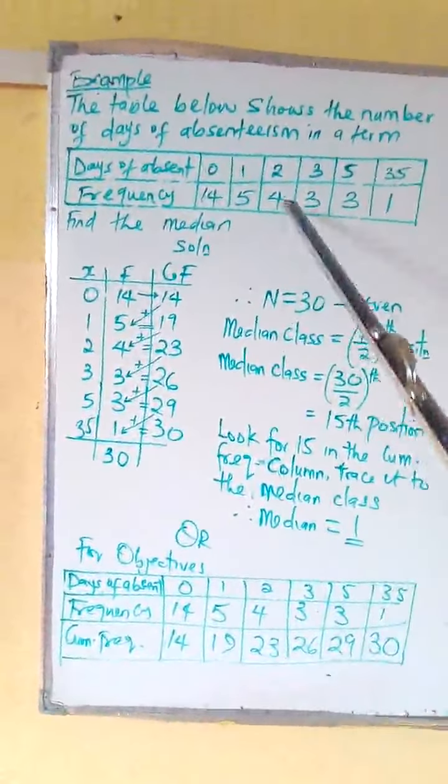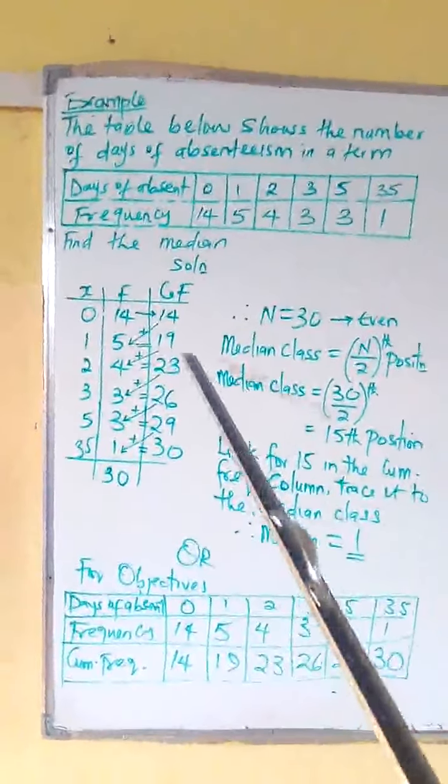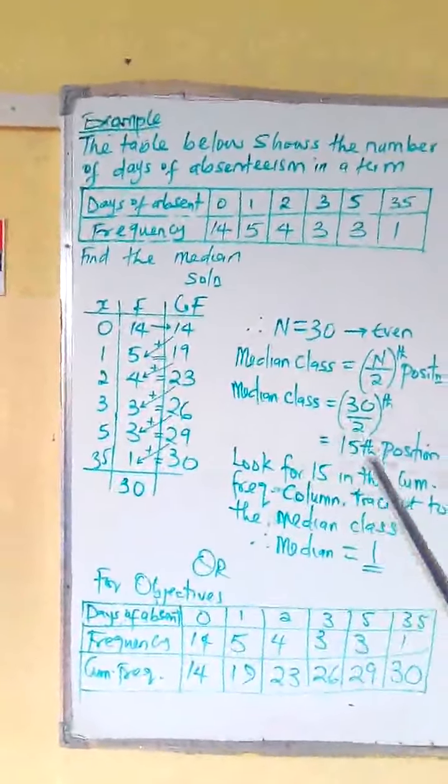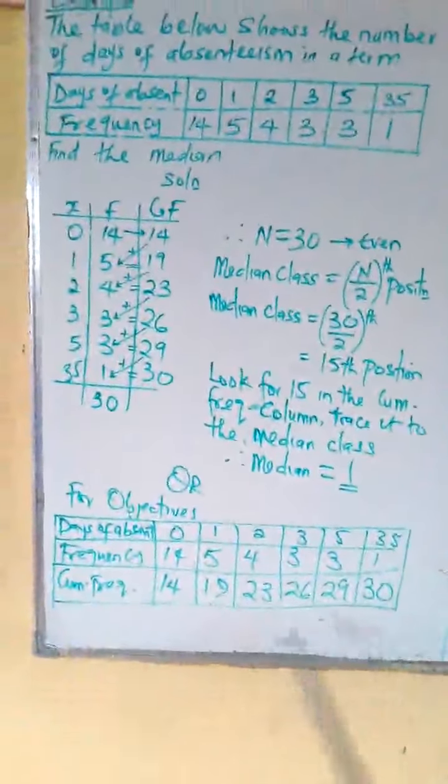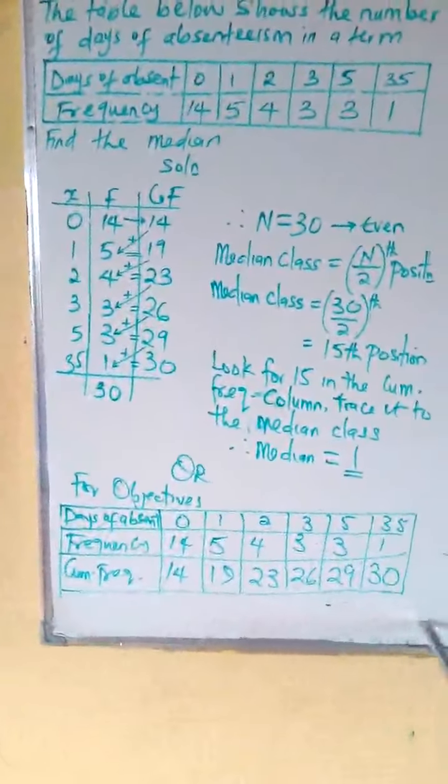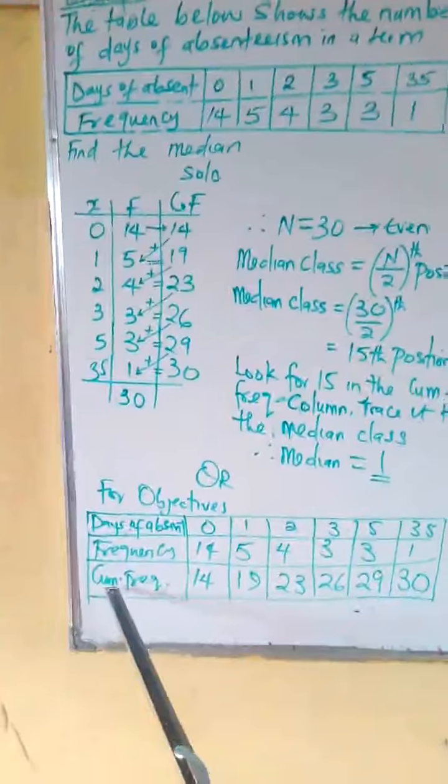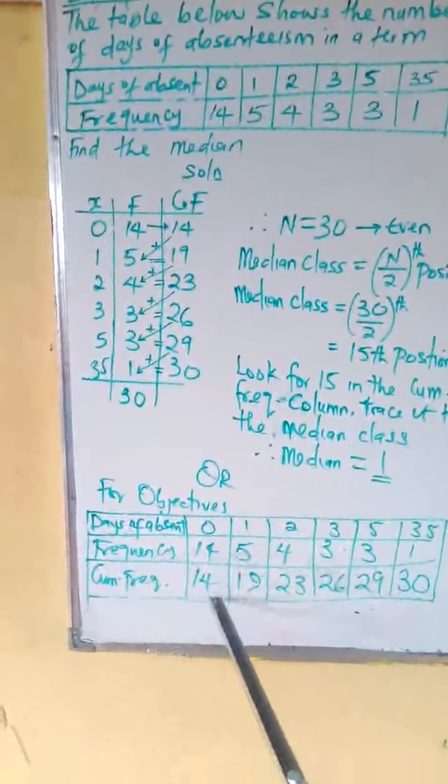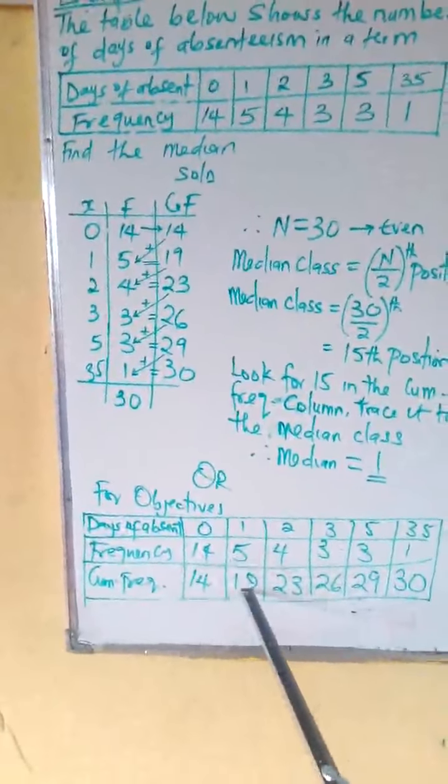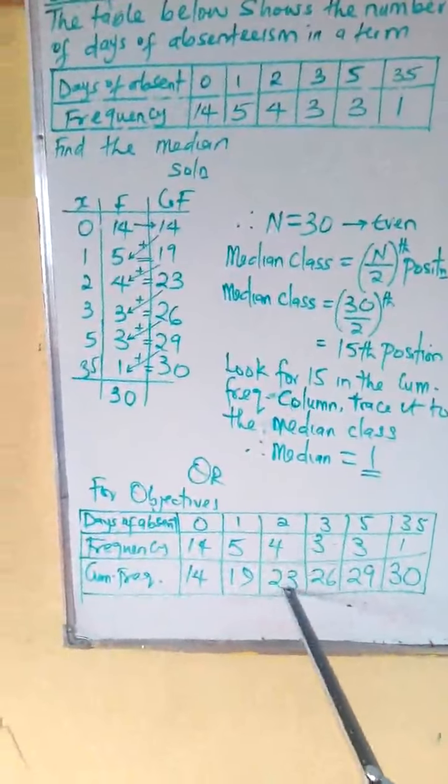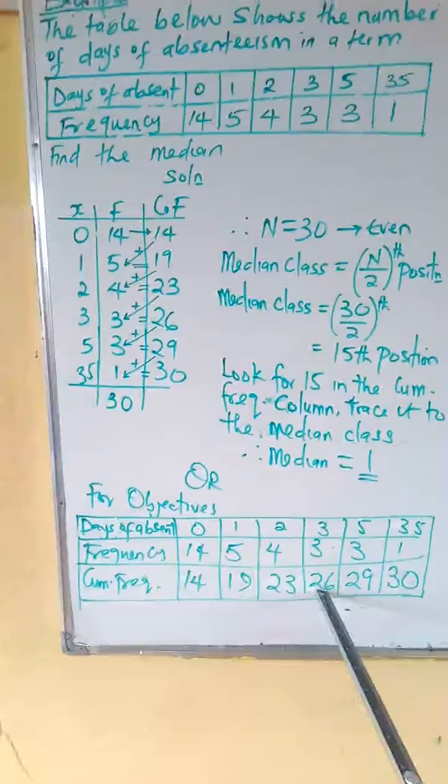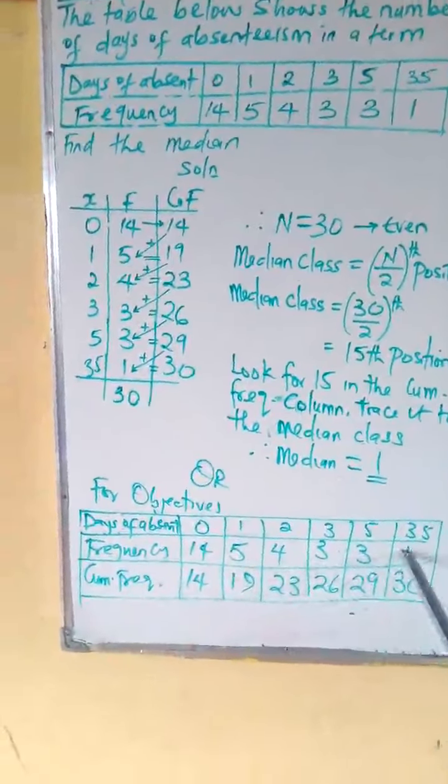Now, in case, if this question is objective, there is no need to draw all this. All you need to do is to use this table. Just draw another row at the bottom of frequency. That's your cumulative frequency. Just do it. 14. 14 plus 5, 19. 19 plus 4, 23. 23 plus 3, 26. 26 plus 3, 29. 29 plus 1, 30.